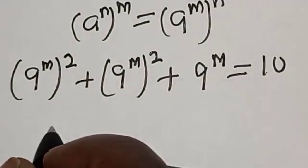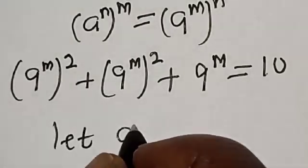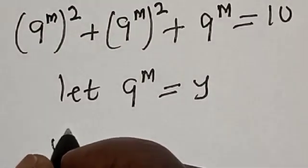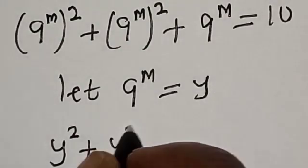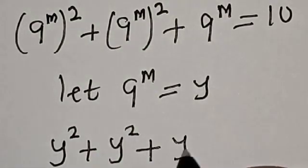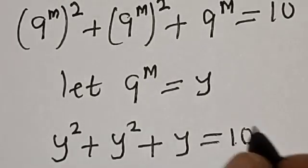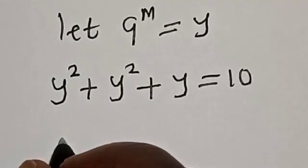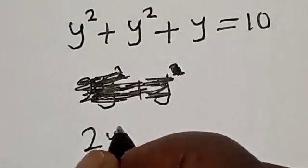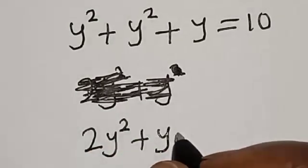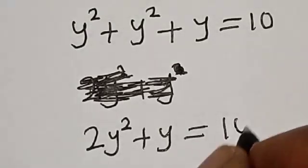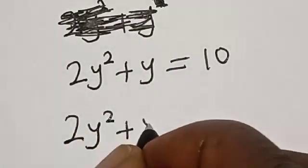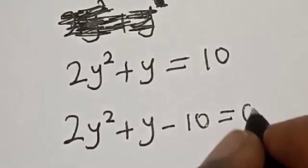Now, let 9 raised to power m equal y. Then we have y squared plus y is equal to 10, which gives us 2y squared plus y minus 10 is equal to 0.